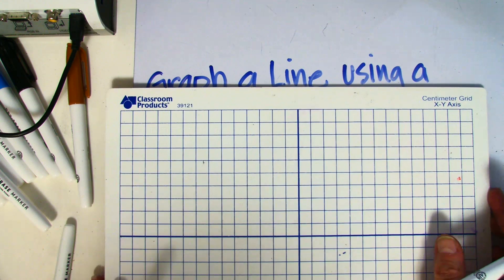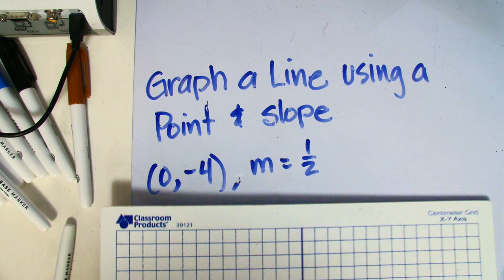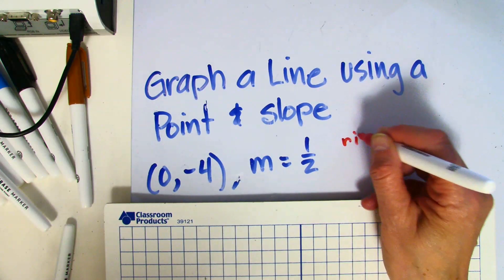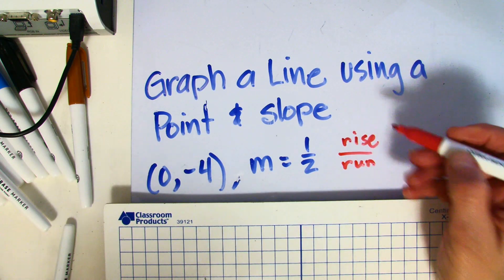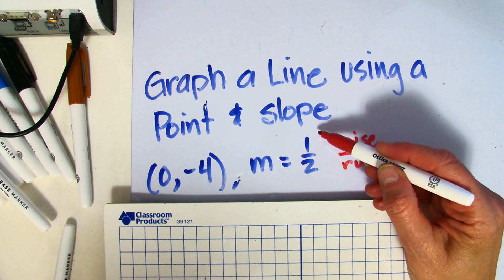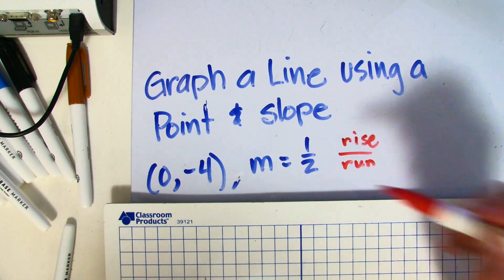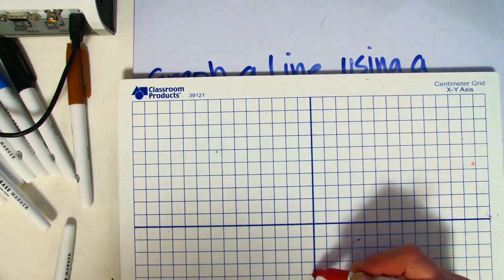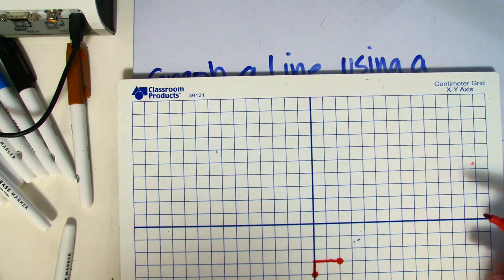Now I know that my slope is 1/2. The slope is also referred to as rise over run. So that means I'm either going to go, in this case, I will go up 1, and I'll go to the right 2. So if I go up 1, and to the right 2, I've got another point.